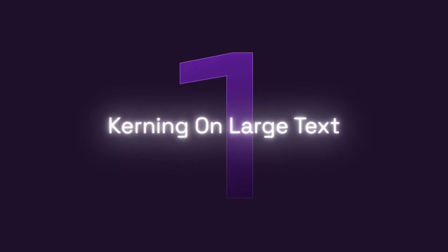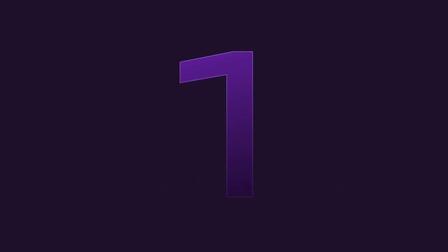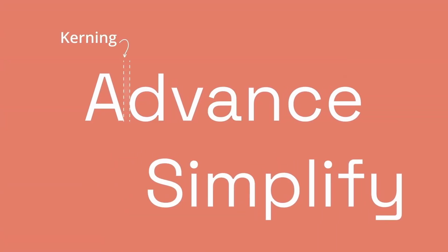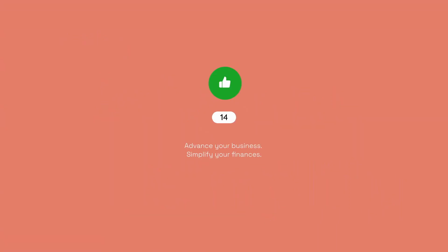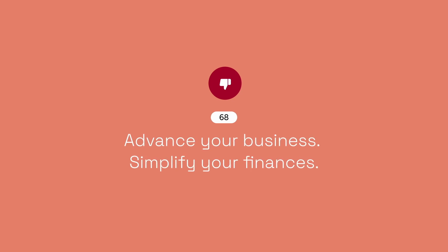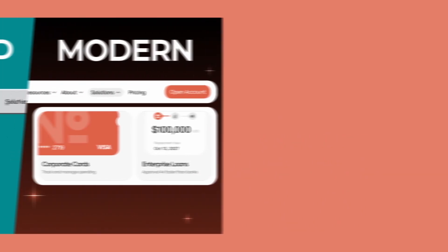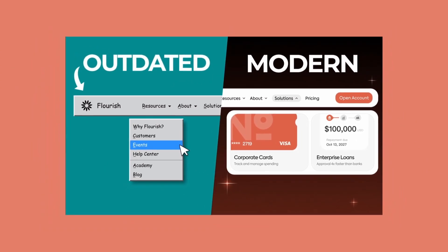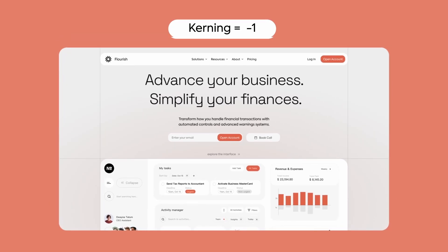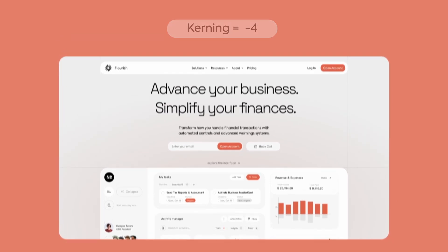First up is kerning on large text. Kerning is the space between letters, and on most smaller text sizes it looks fine — Figma automatically sorts that out for you. But on larger text sizes, generally over 70 to 80 pixels, it starts to matter more. Here's a design made a while ago with zero kerning on it. I just eyeball this, but generally negative 2 to negative 4% is a reasonable amount.